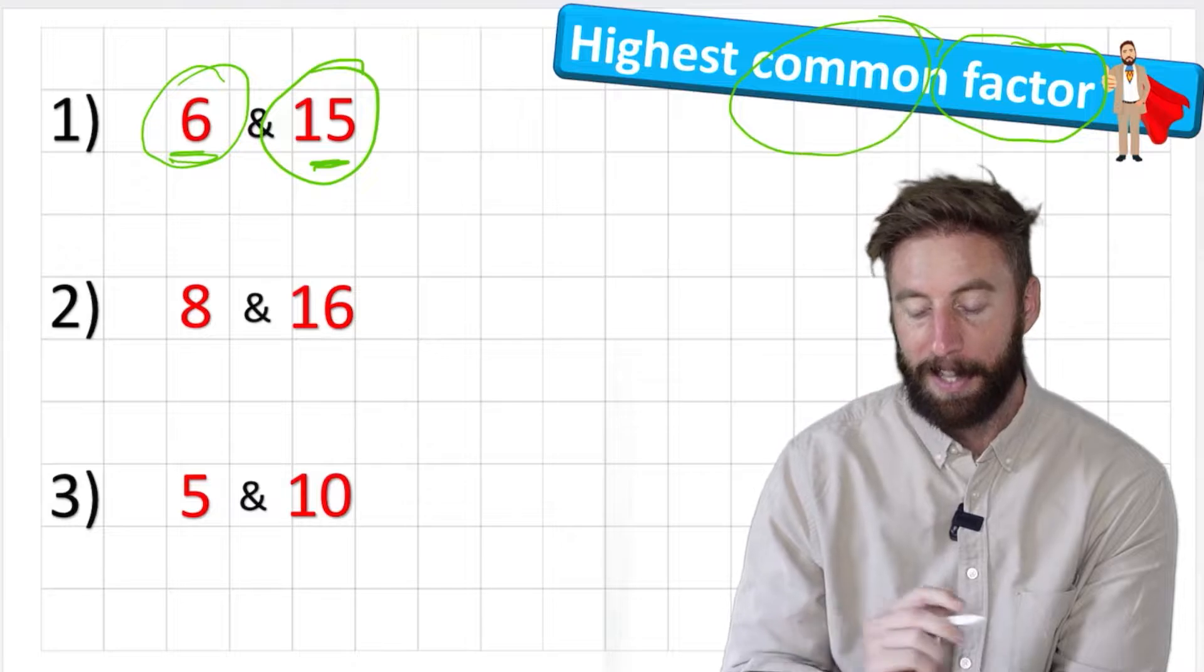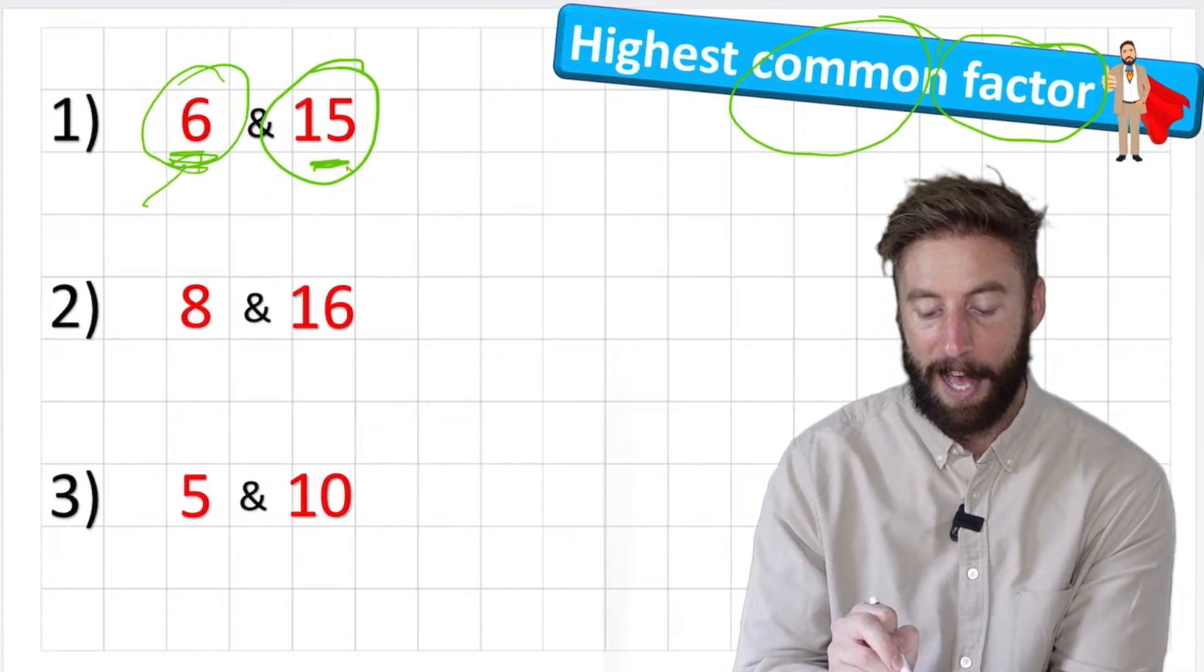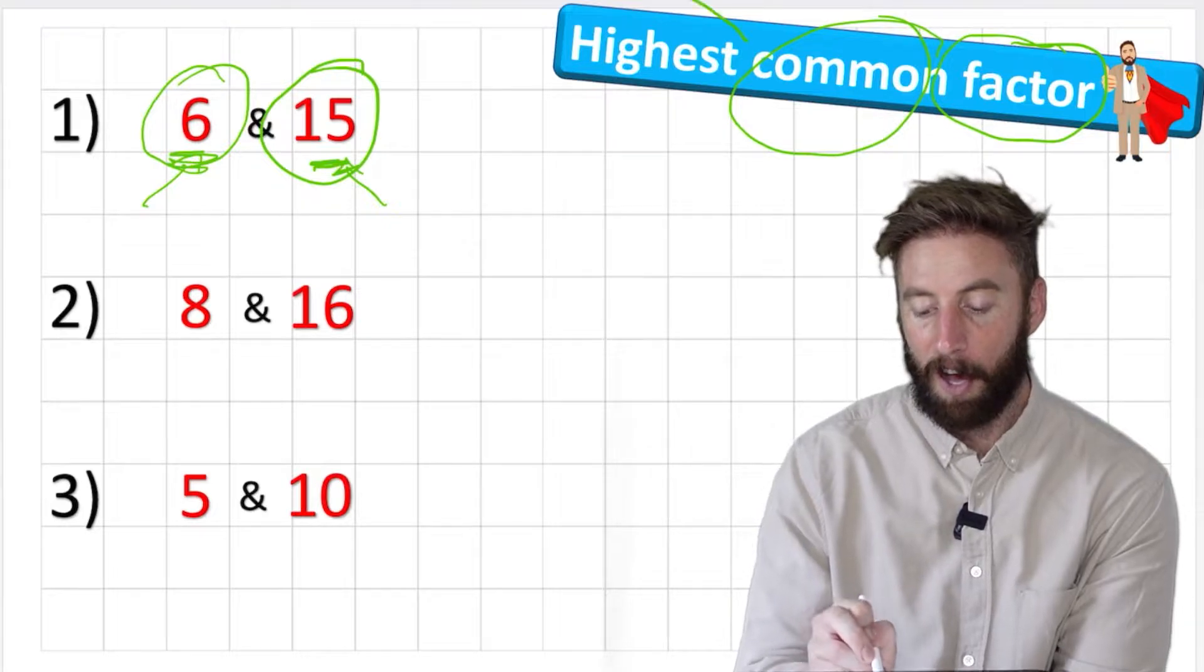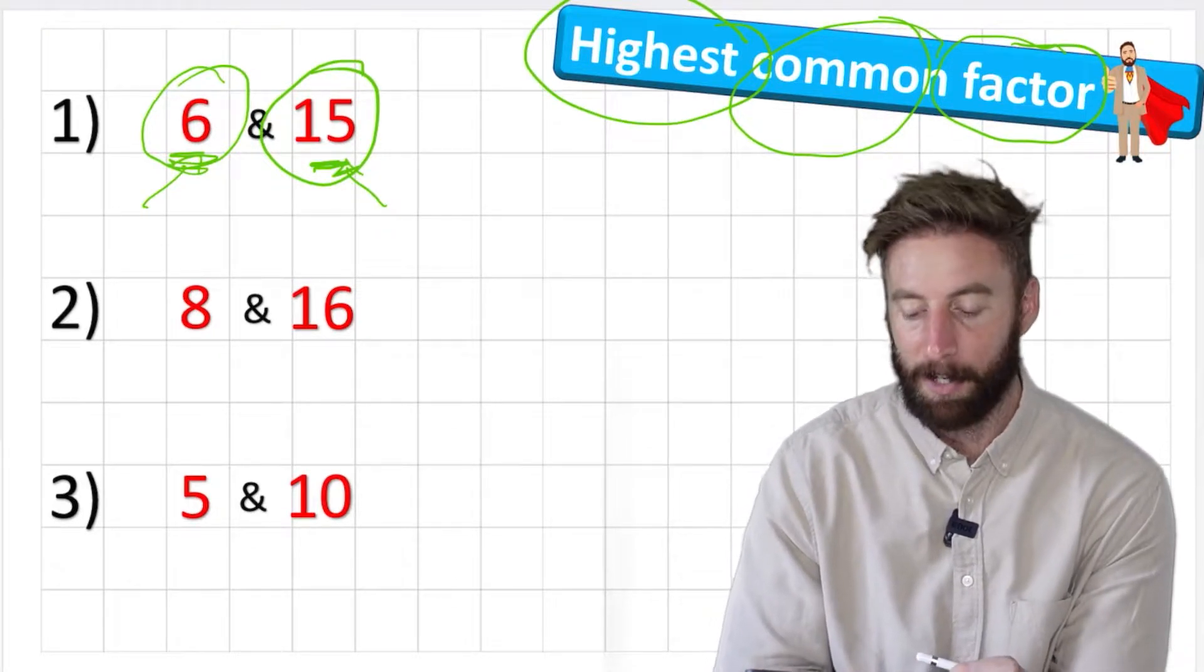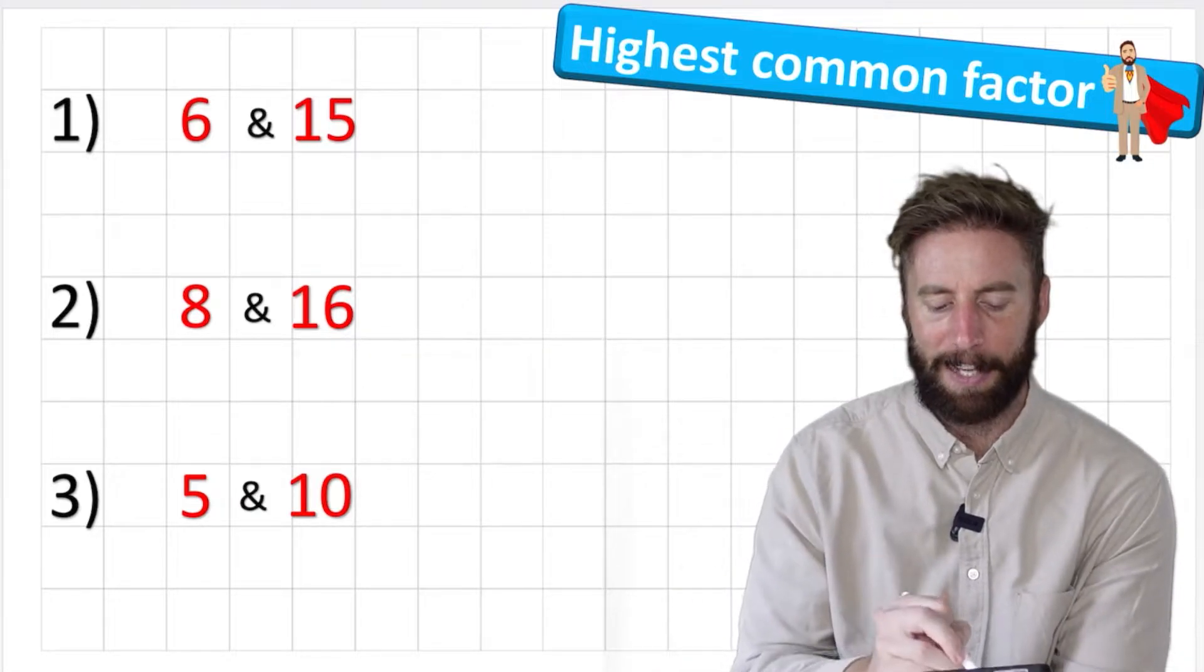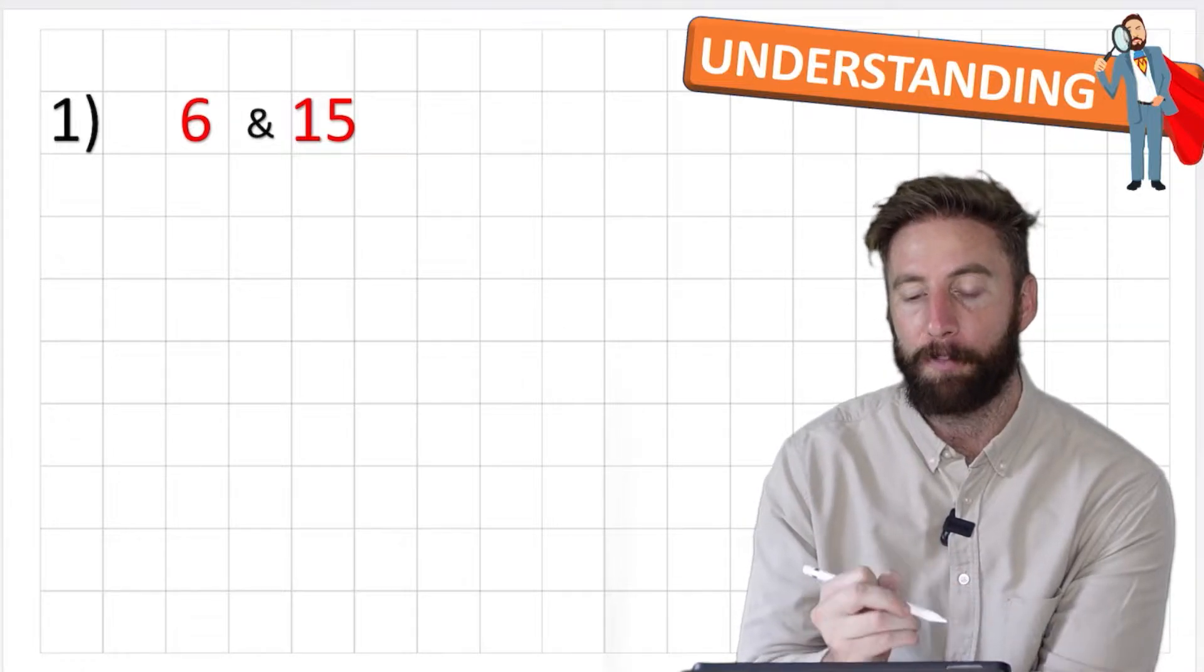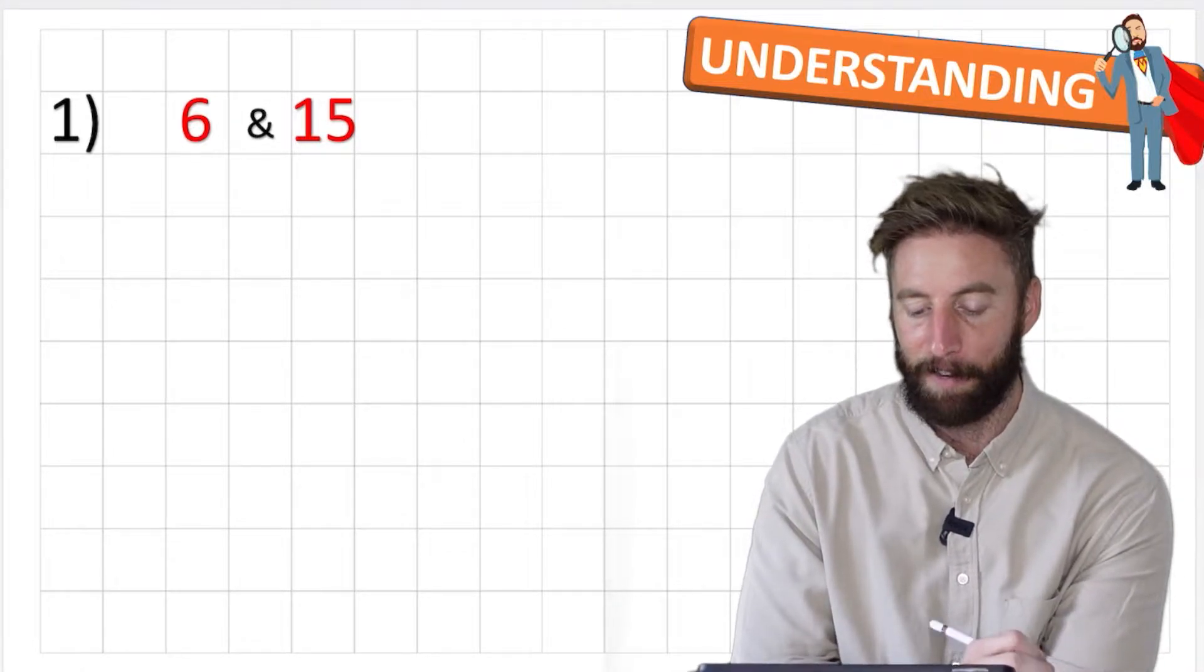Common just means the same, so we're looking for factors that are both in six and in fifteen, and the highest obviously means the biggest number, the greater value. Okay so let's put that into practice a little bit and let's have a look at question one and let's have a look at these two numbers.